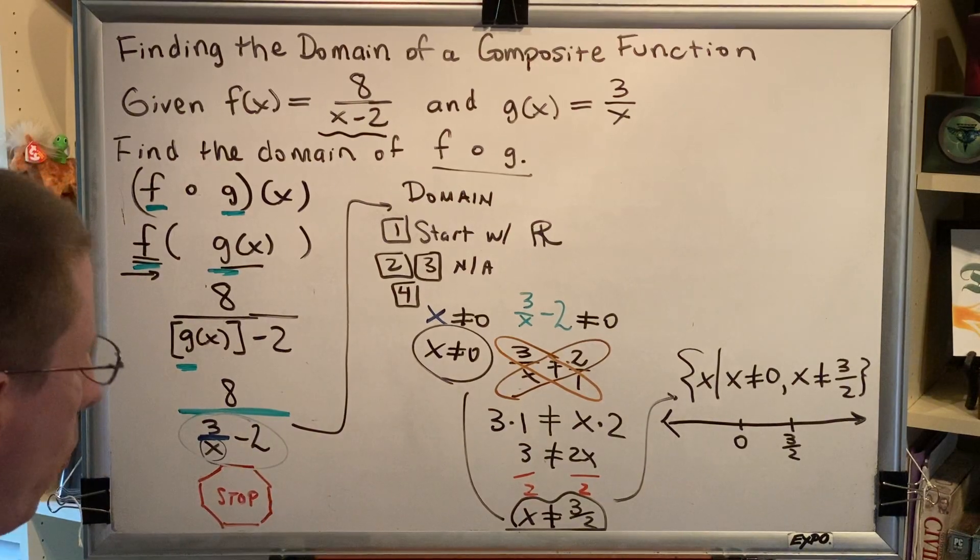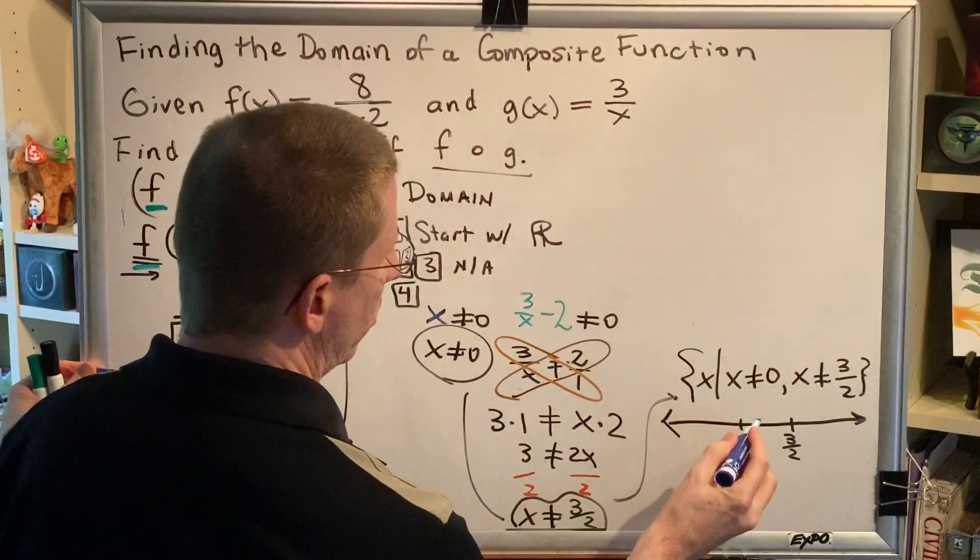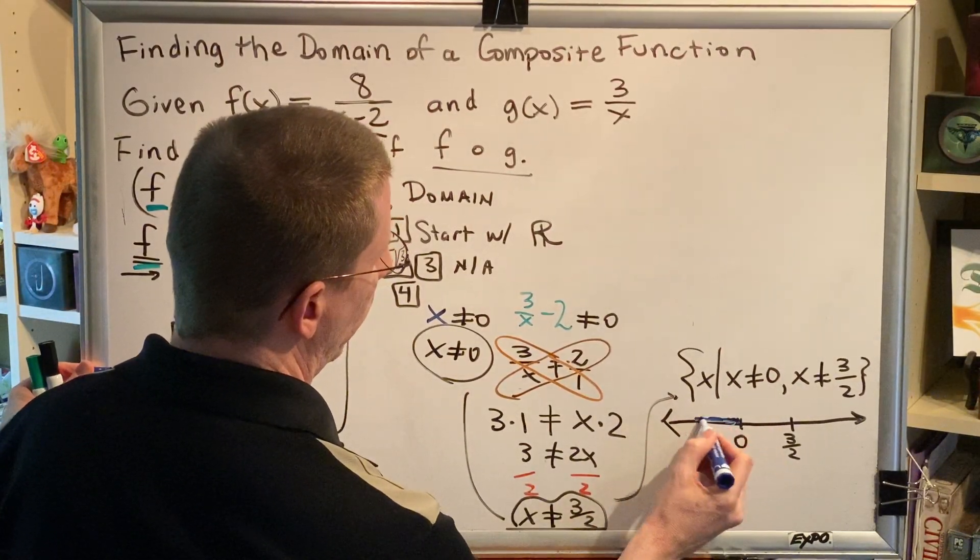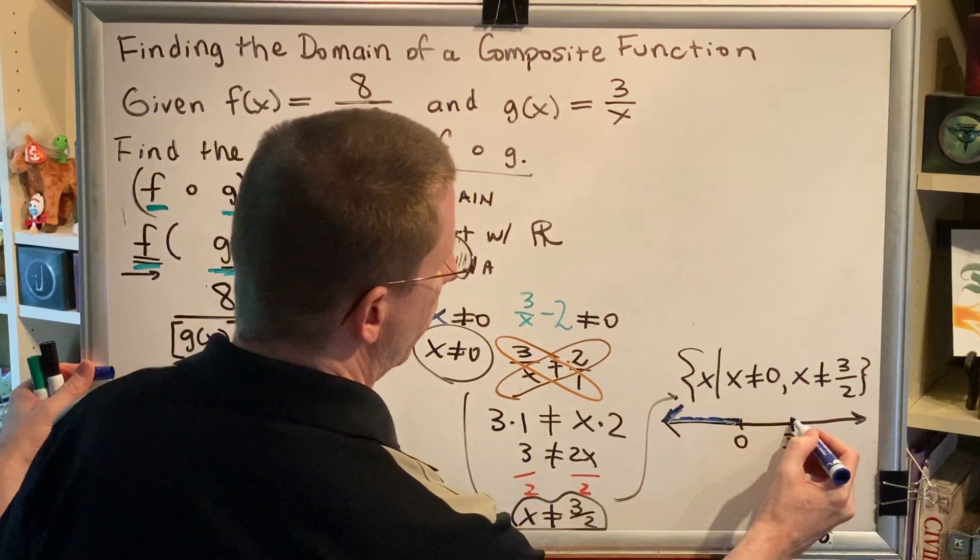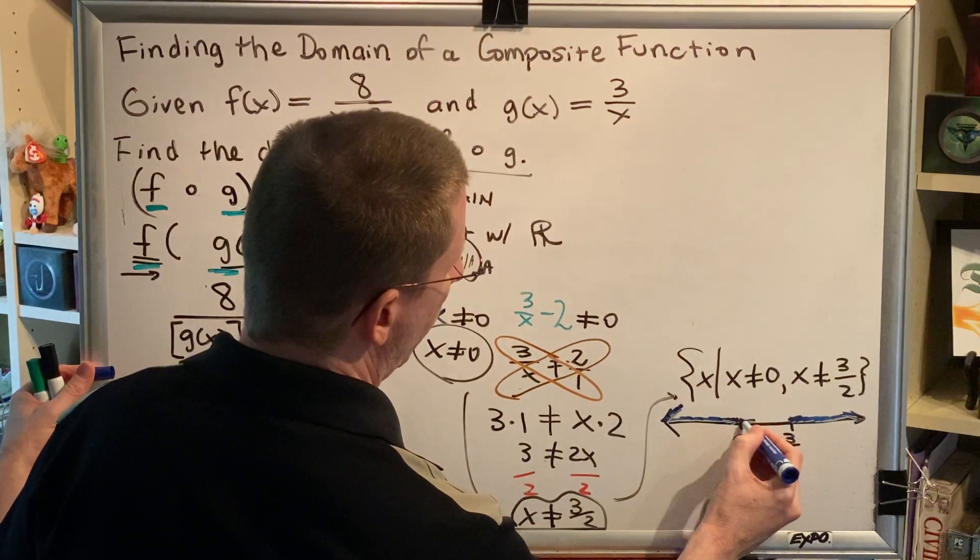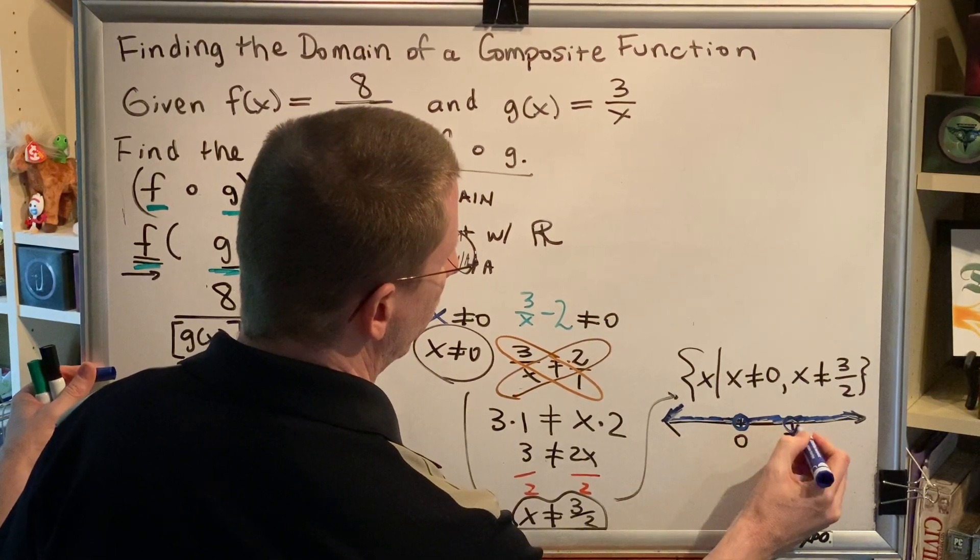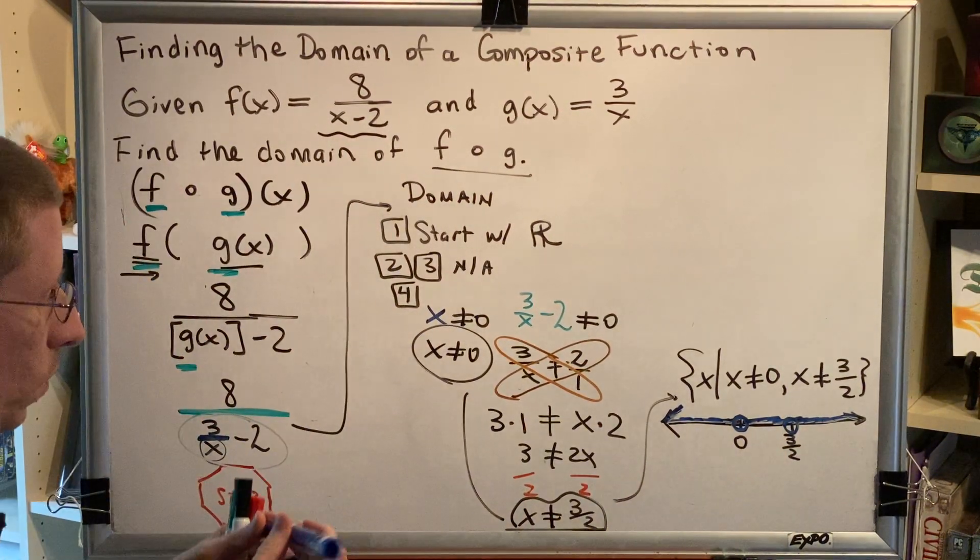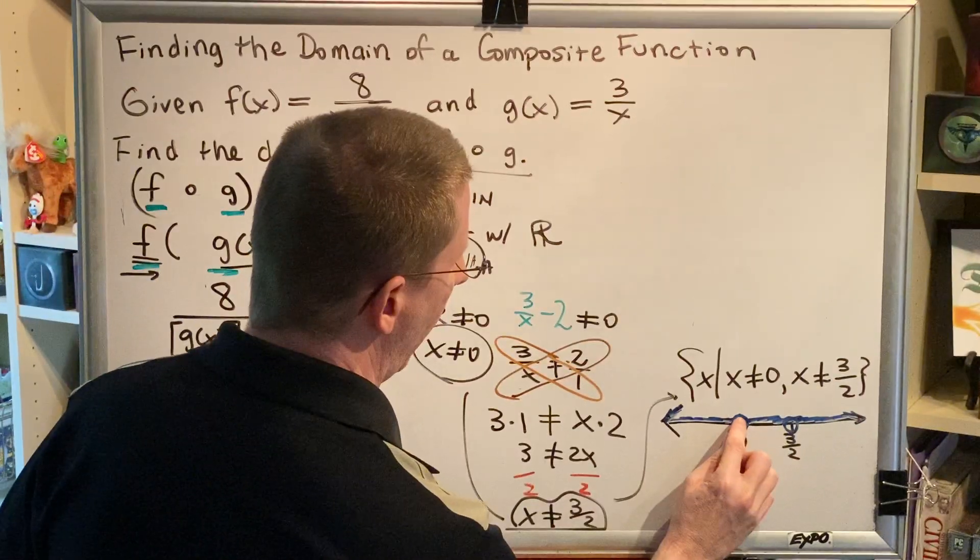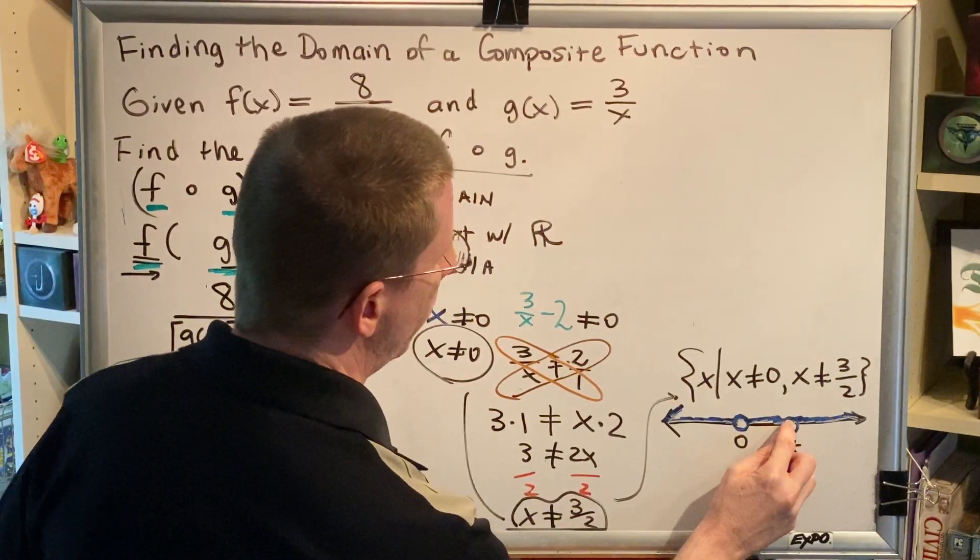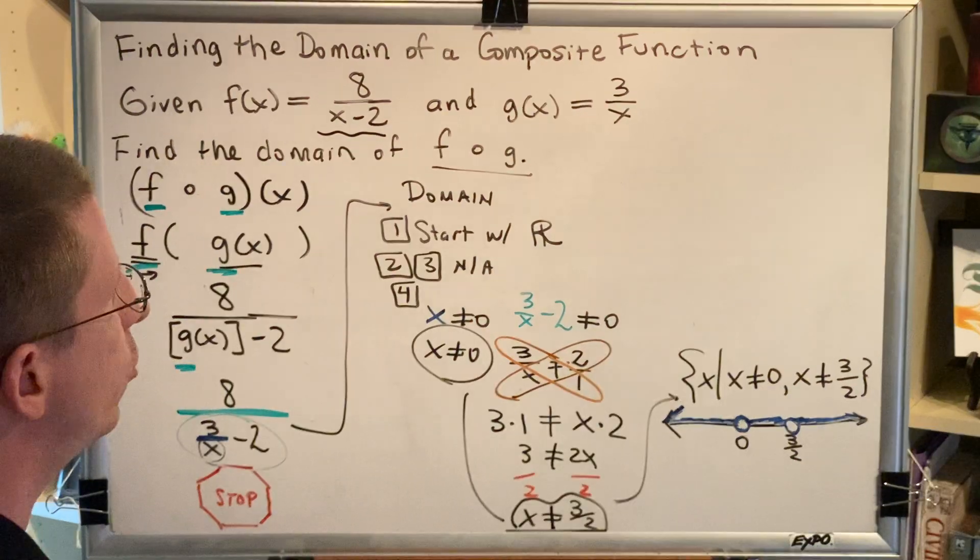If we want every number in the world except for zero and three halves, what that means is that we want all of the numbers that are to the left of zero, all of the numbers that are to the right of three halves, and all of the numbers that are in between, but not including zero and not including three halves. There is a hole in the number line at those two locations. And because of that hole, it splits our number line into three pieces.